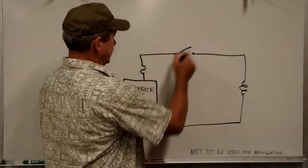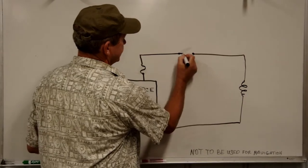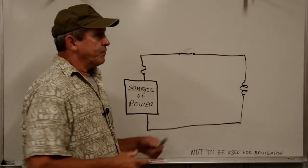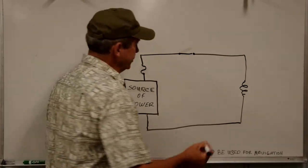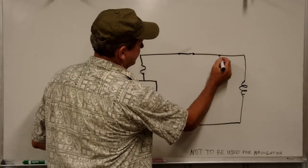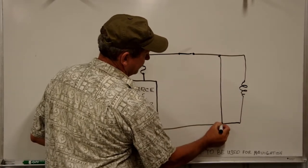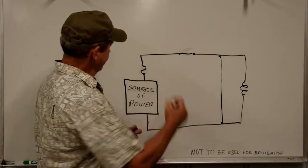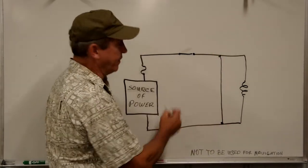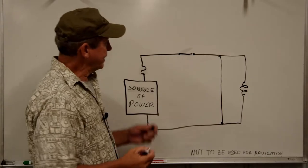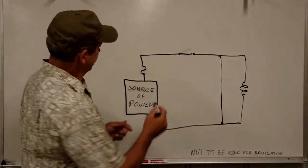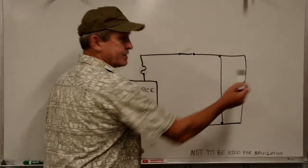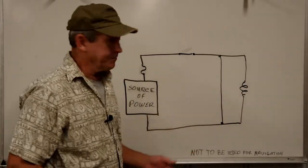If something occurs and we introduce a path another way, our flow of energy — our electrons — have a shorter path. This is a short circuit. It might prefer to go this way — maybe this is the path of least resistance. In that case, our device or appliance is not functioning.